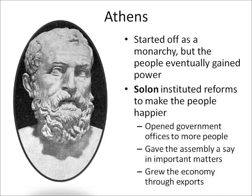Athens developed very differently than Sparta. Like Sparta, Athens started off as a monarchy, but the people weren't happy — there was a lot of debt, especially from poorer people like farmers and merchants. There were even cases of people having to sell themselves or their families into slavery just to pay off debt. Eventually, change came under a leader named Solon. He opened up government offices to more people so it wasn't just the aristocracy holding all the power, and the assembly gained a say in important matters like war or who would be the leader. The economy grew through exports — wine, olive oil, things Greece is famous for.